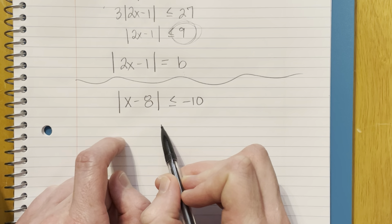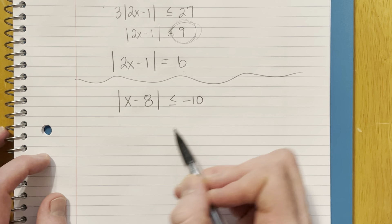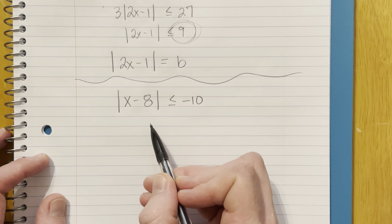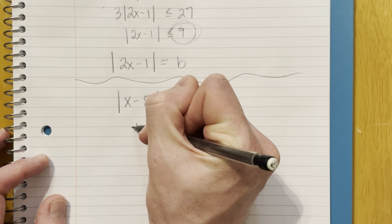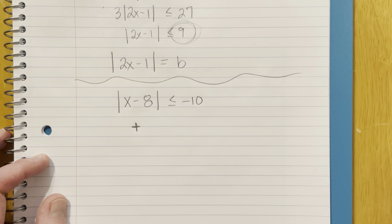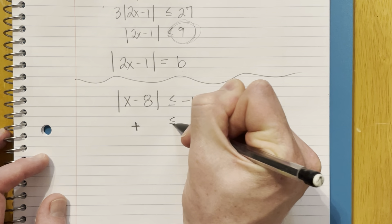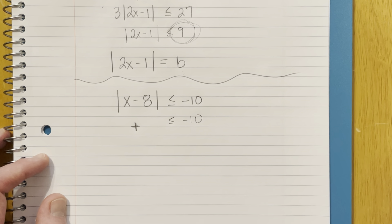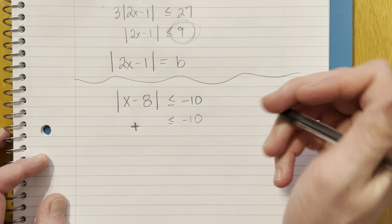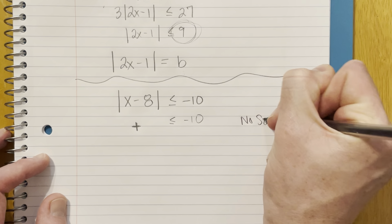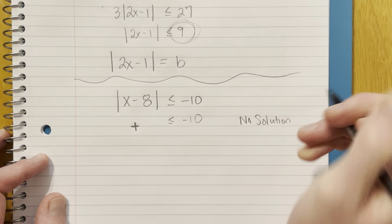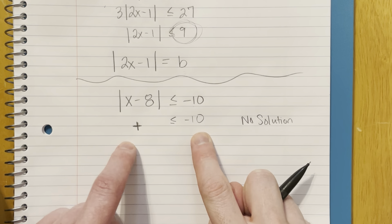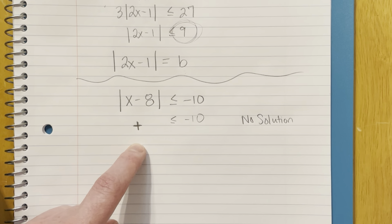You've worked all the way down and you have two absolute value bars, but you want to stop here because the absolute value is always going to give us a positive output. That positive number will never be less than a negative, so this has no solution. There's no way we're ever going to get a solution that comes out less than negative 10, because we're always going to have a positive value no matter what we plug in.